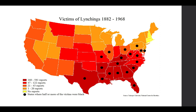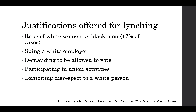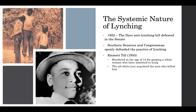Another way in which hierarchies were enforced was through the practice of lynching—essentially extrajudicial murder of a Black person or a white ally who sympathized with or campaigned on behalf of the rights of Black people. While lynching was most common in the Deep South, it occurred at some point in 47 states. The paradigmatic case was like what you see in Harper Lee's To Kill a Mockingbird—a Black man accused of raping a white woman—but this was cited only in 17% of cases. Other transgressions that resulted in lynching could include suing a white employer, demanding to be allowed to vote, participating in union activities, or just being disrespectful to a white person.